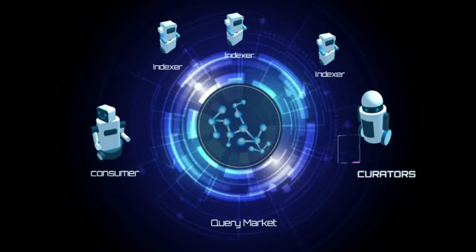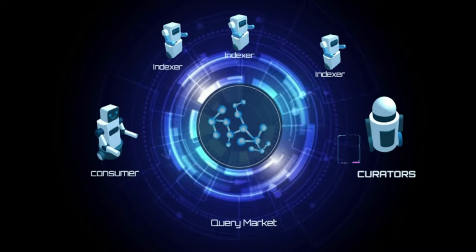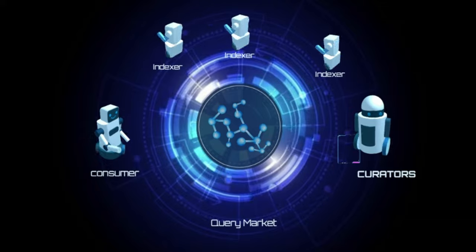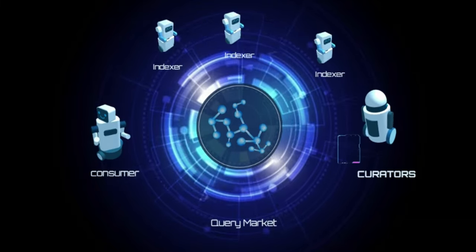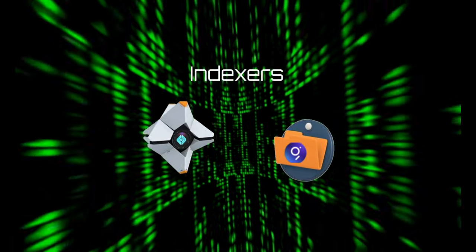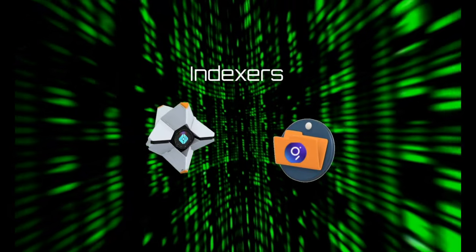Once a curator has found such a potentially attractive subgraph, they curate it by signaling on it. In doing so, curators highlight to indexers which subgraphs are valuable and should be indexed accordingly. Indexers are node operators in The Graph Network...